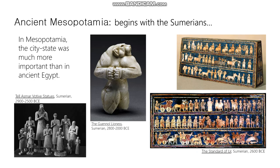Ancient Mesopotamia begins roughly around the same time as ancient Egypt, somewhere around 3200 BCE. By this point, large towns were becoming city-states. The ancient Sumerians were living in the southern part of Mesopotamia.